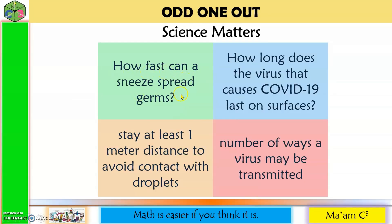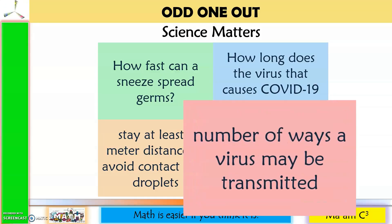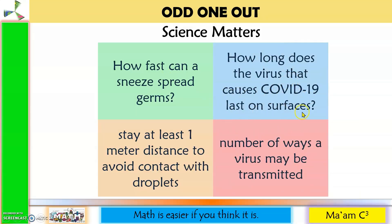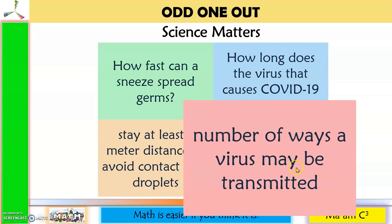Next group: how fast can a sneeze spread germs, how long does the virus that causes COVID-19 last on surfaces, stay at least one meter distance to avoid contact with droplets, number of ways a virus may be transmitted. The odd one out is the number of ways a virus may be transmitted, because speed, length of time, and distance are all measurable. The number of ways is countable — you can transmit the virus by coughing, sneezing, singing, or speaking.